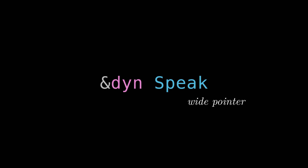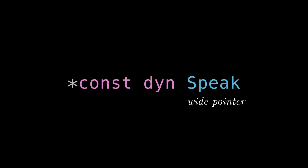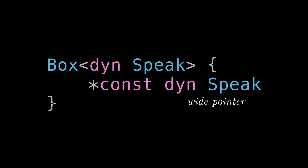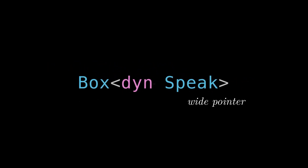This isn't the only type of wide pointer in Rust — slices are also wide pointers where the extra data is the slice's length. But for our purposes today, when I say wide pointer I'm referring to this kind. Not only are references to trait objects wide, but raw pointers are too, including the raw pointers inside NonNull and Box — making, for example, a Box dyn Speak itself be a wide pointer with no additional indirection, which I think is neat.